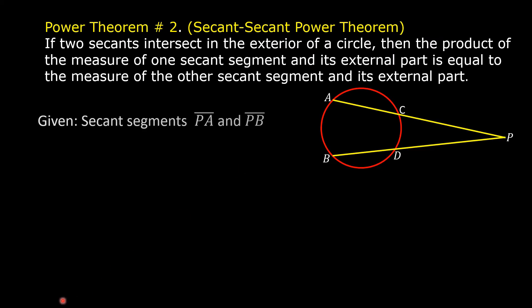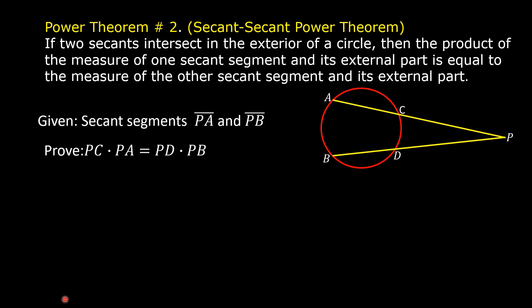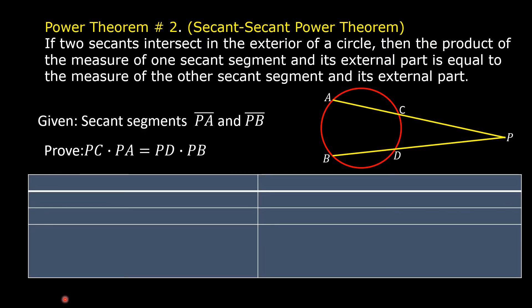For our given, we have secant segments PA and PB. We are going to prove that PC times PA is equal to PD times PB. In the first column, we write the statements; in the second column, we write the corresponding reasons. For our first statement, we have the given secant segments PA and PB. The reason, of course, is given.